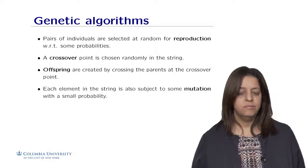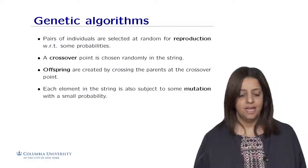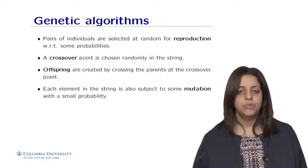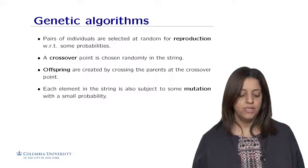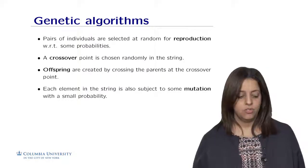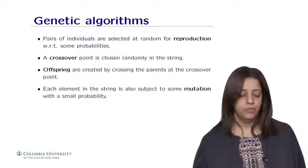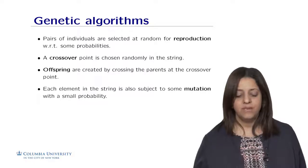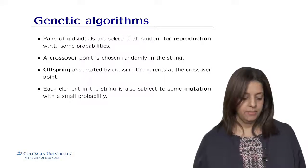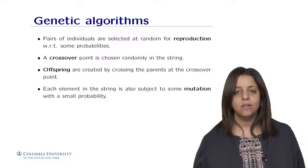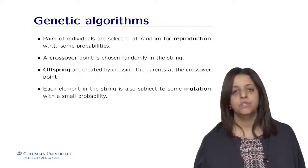In genetic algorithms, pairs of individuals are selected at random for reproduction with respect to some probabilities. A crossover point is chosen randomly in the string. And at this crossover point, we're going to cross the parents to create an offspring. Each element in the string is also subject to some mutation with some small probability.